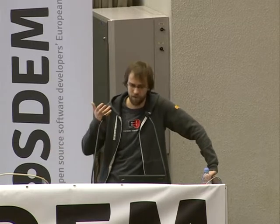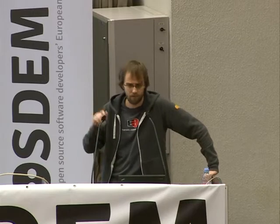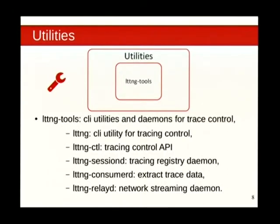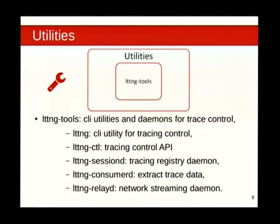UST is an in-process library. You instrument your application, recompile, and you have your tracer. The good thing is you can enable or disable any events during runtime. You can live trace, snapshot — there are a lot of features. You can use the kernel as of 2.6.38; before that there are three patches, but after that there are none — only modules. The LTTNG session daemon is the tracing registry daemon that combines everything. When you create a trace with the command line using LTTNG create, you can use it for both kernel and user space tracing.